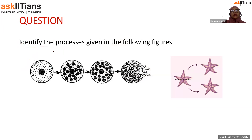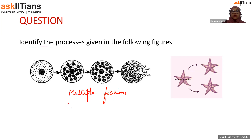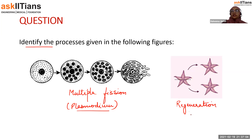In the first question, you have to identify the processes given in the following figures. The first figure is of multiple fission, which occurs in plasmodium. The second is regeneration, which occurs in starfish.